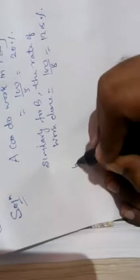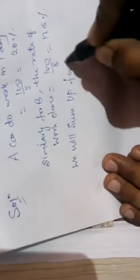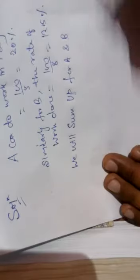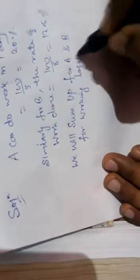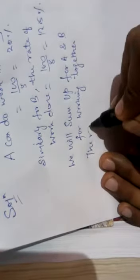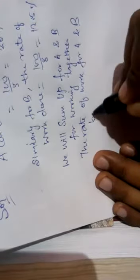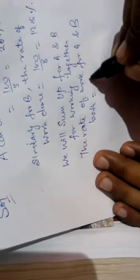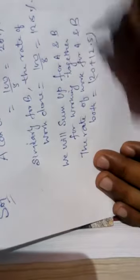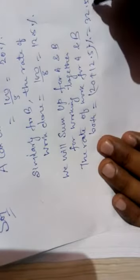Now we will sum up for A and B both, because they have to work together. For working together, the total rate of work for A and B both is equal to 20 plus 12.5, which is equal to 32.5 percent.